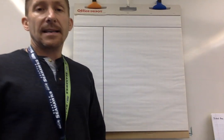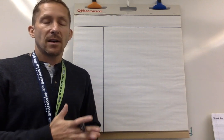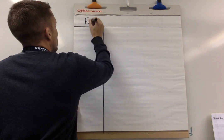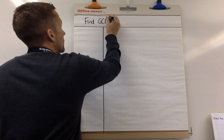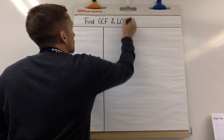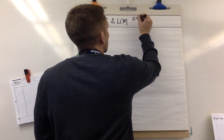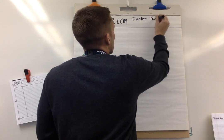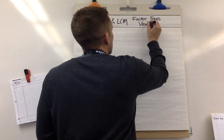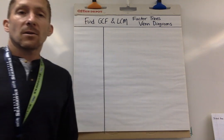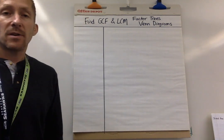Today's topic: we are still going to be finding greatest common factor and least common multiple. In the first part of the lesson you learned how to do this using factor rainbows and making lists of multiples. Today I'm teaching you another way to do it — finding greatest common factor and least common multiples using factor trees and Venn diagrams.